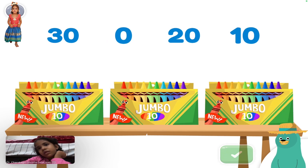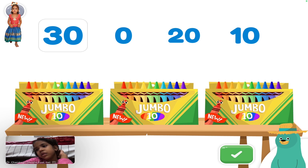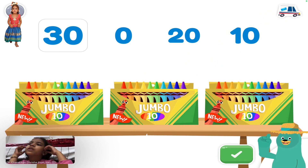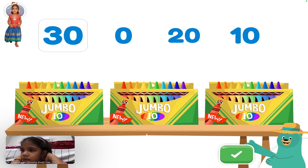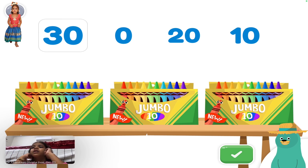Quick! Without counting, how many crayons are in the boxes? Awesome! Each box has ten. There are three boxes. That means there are thirty crayons total.